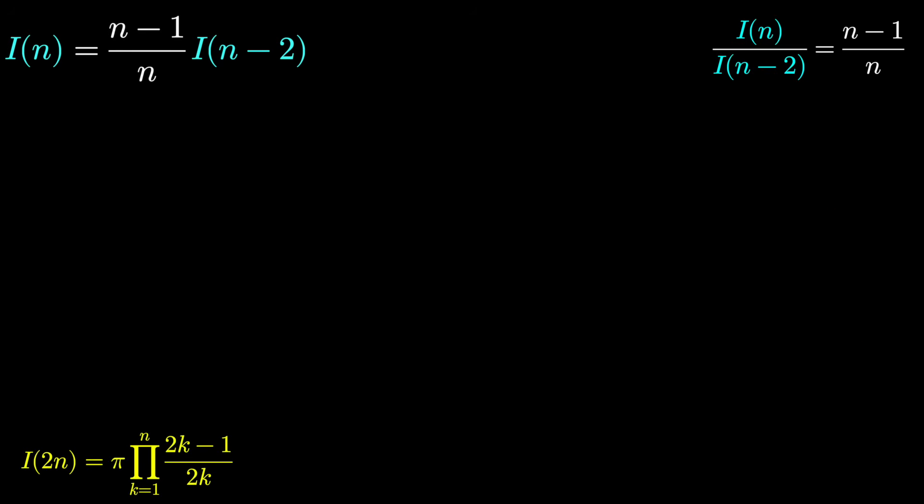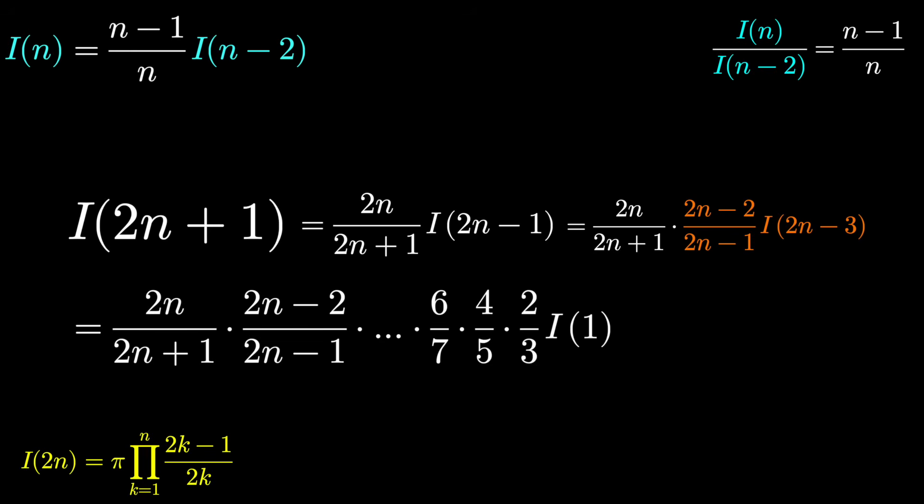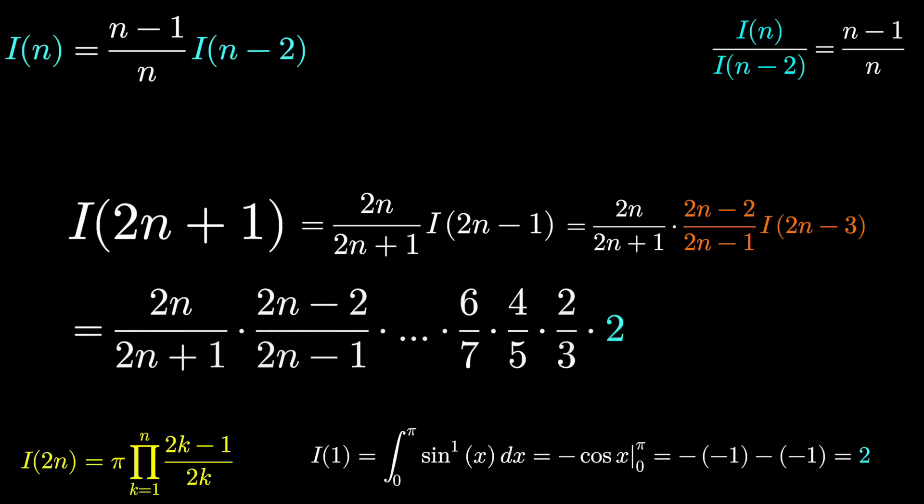What if the power was odd? We can do the same thing for I(2n+1). This ensures the power is odd. Well, doing the recursion again, I(2n+1) would be 2n/(2n+1) times I(2n-1). Recurring again, the I(2n-1) becomes (2n-2)/(2n-1) times I(2n-3). A very similar process. This would turn into 2n/(2n+1) times (2n-2)/(2n-1) all the way down to 6/7 times 4/5 times 2/3 times I(1). Which we can quickly calculate I(1). That's the definite integral from 0 to pi of sin^1. This will just be 2. And so I(2n+1) is the product 2 times 2k/(2k+1), where k goes from 1 to n.